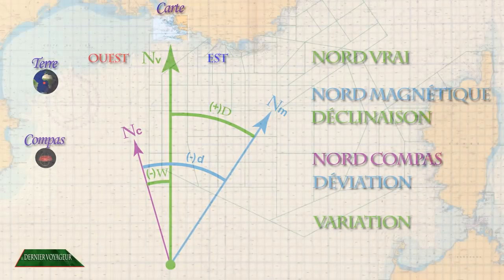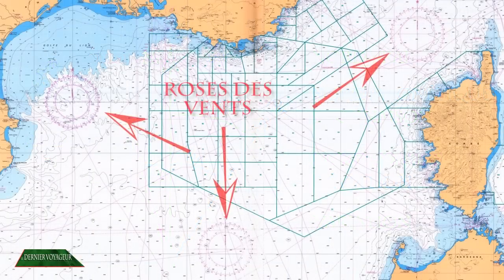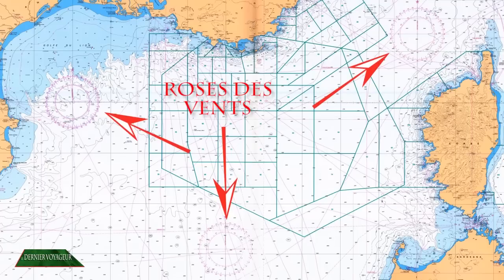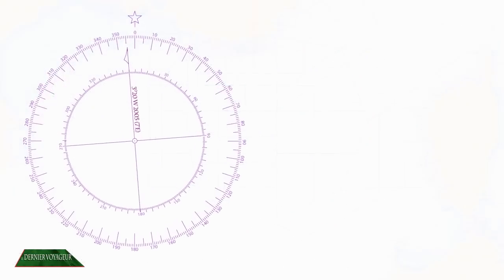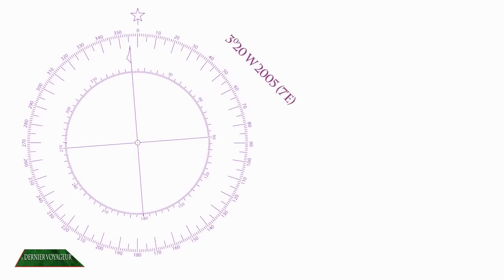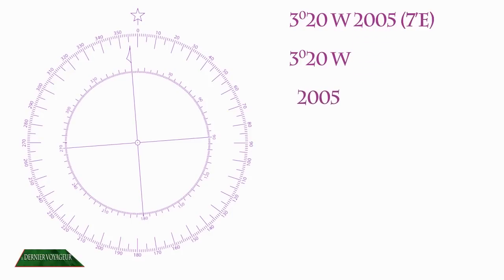Sur les cartes marines sont imprimées des roses des vents, ainsi qu'un texte qui donne toutes les informations pour calculer la déclinaison. Le texte est généralement composé des éléments suivants: un angle en degrés minutes, une année, un angle en minutes.